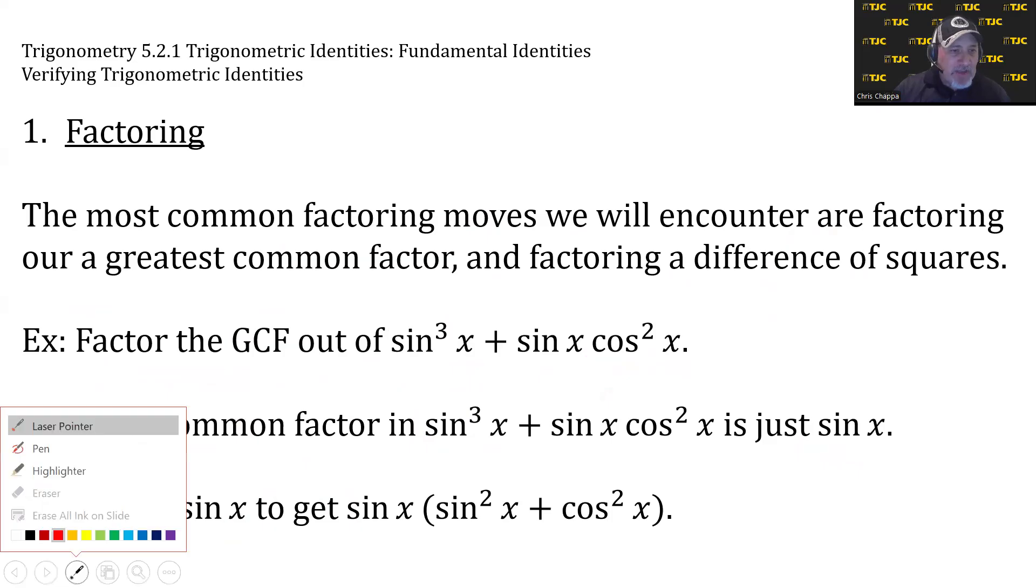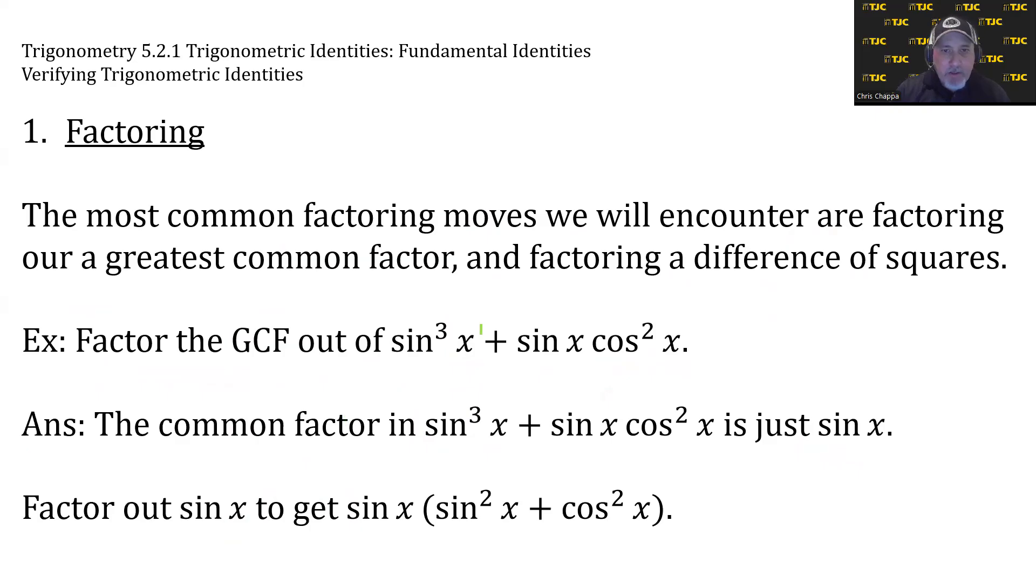When we factor the sine of x out of that, when we factor a sine of x out of sin³x we get sin²x, and when we factor a sine of x out of sin x cos²x, we have just cosine of x. And the greatest common factor is put in front. So it factors to give sin x times (sin²x + cos²x). Now you should recognize that sum as part of a Pythagorean identity that equals one. So this simplifies to sine of x times one, which is just of course sine of x.